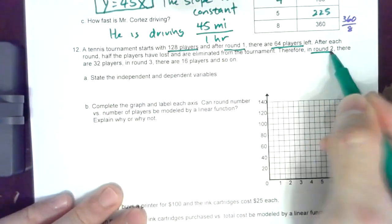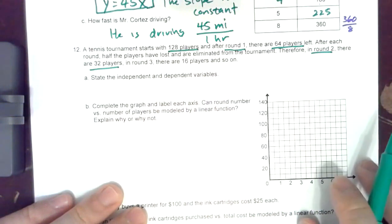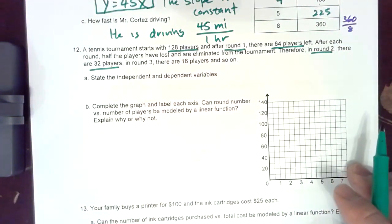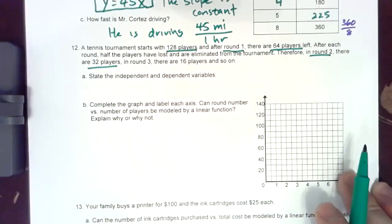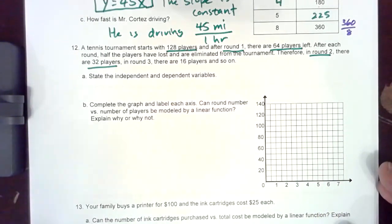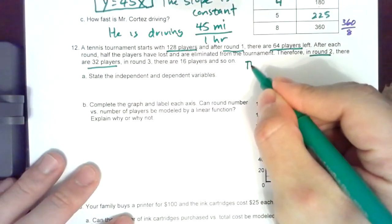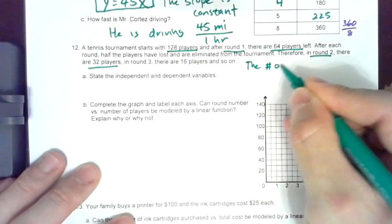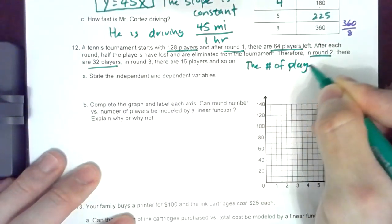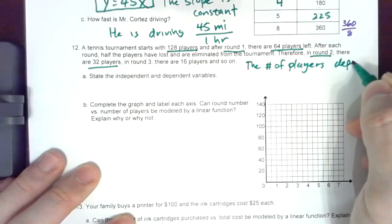So we actually have to determine the independent variable and the dependent variable. So the only thing I can say is there are players and there are rounds. So what depends on what? Would you say that the number of players depends on what round it is or would you say the round depends on the number of players? I think it just makes sense to say the number of players depends on the round.